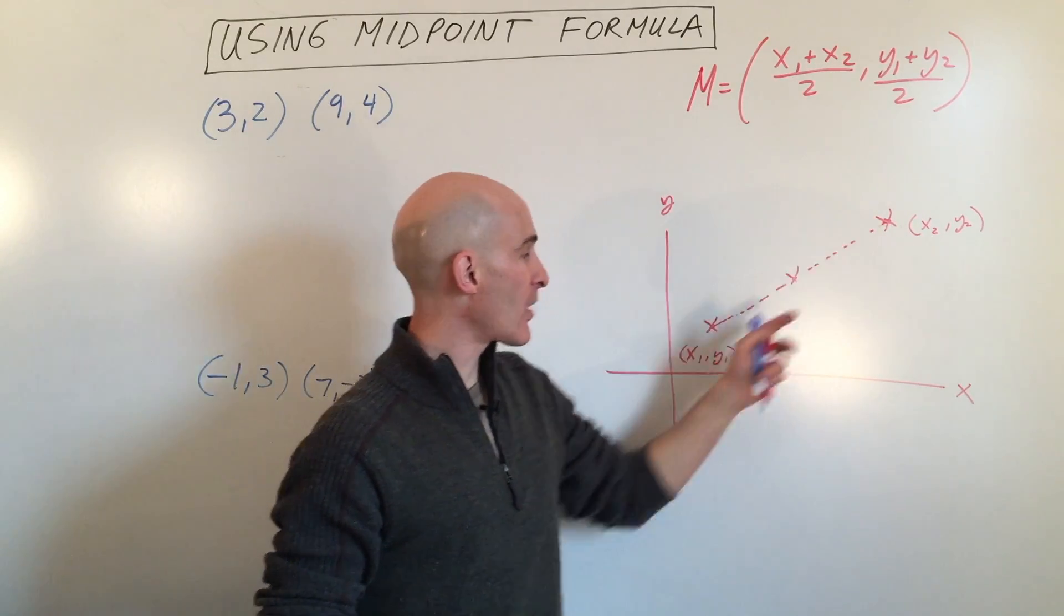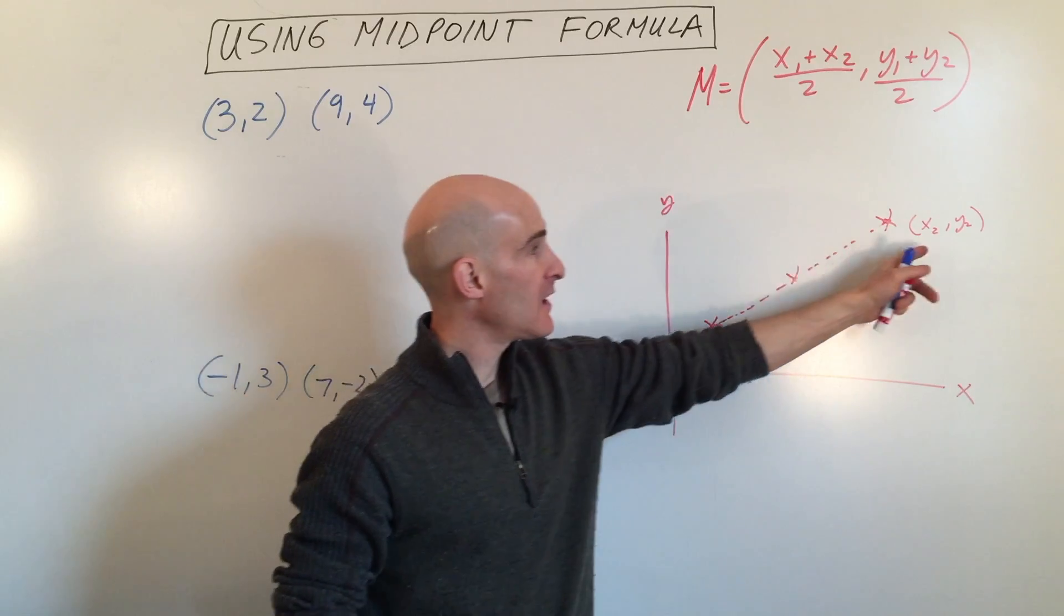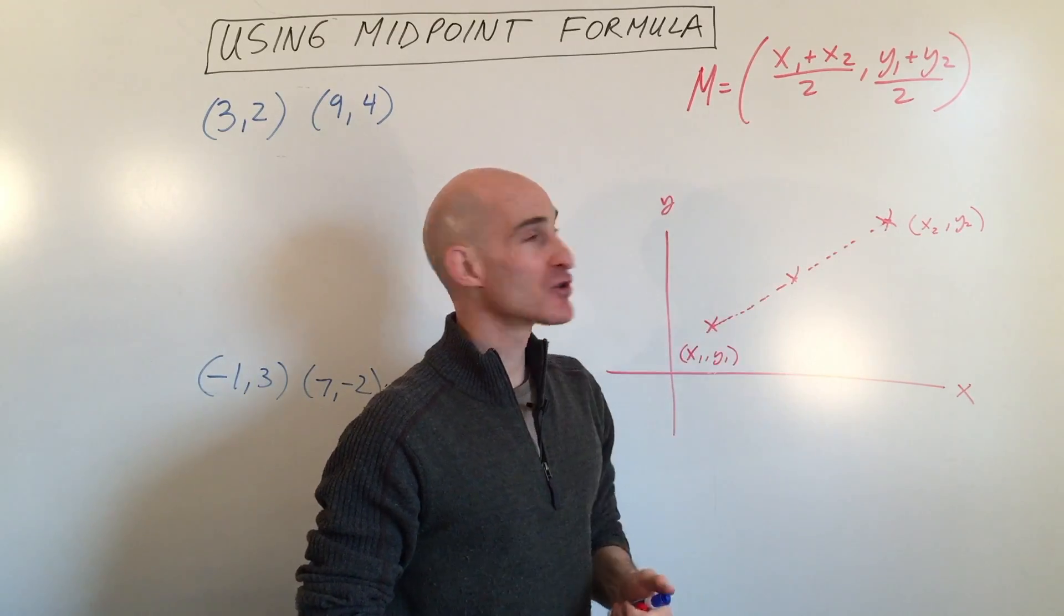If you have two points, and we're representing this by x1, y1, so that just means point number one, and x2, y2, that means point number two.